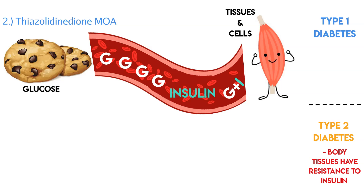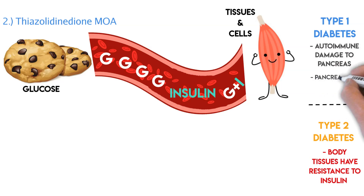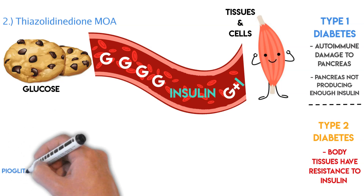That's very important to know. Type 2 diabetes is when the tissues and cells have a resistance to insulin. When there is a resistance, there are only two things you can do: you can either increase the insulin to overcome the resistance, or you can make your tissues more sensitive. That's very important to understand as we go through the mechanism of action of our TZDs. Type 1 diabetes is a completely different pathologic pathway — the pancreas is damaged, typically from an autoimmune disease, and the pancreas is not pumping out insulin, which is a completely different issue than type 2 diabetes.